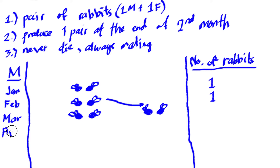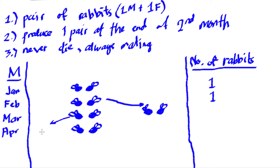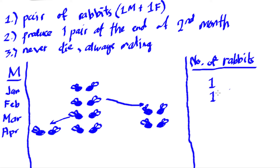Here comes April. Of course they never die, so these two pairs will continue to produce offspring. The original pair produces another offspring here. And these new offspring — they still get to know each other, so they cannot reproduce yet. So in April we have three pairs.